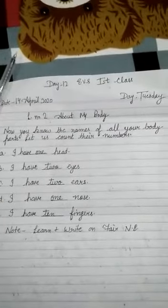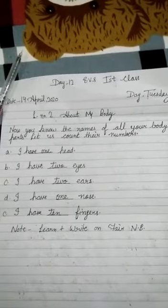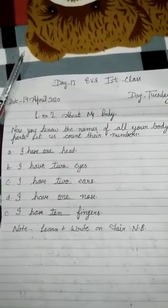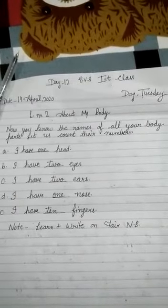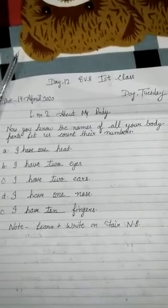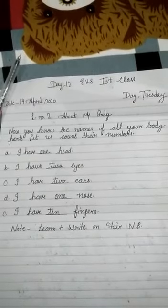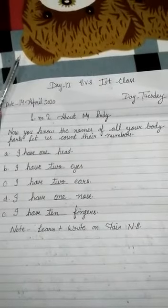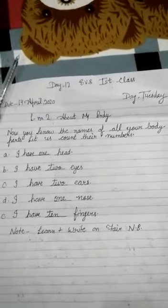Good morning, students. Today's date is 14 April and the day is Tuesday. This is the last number two of EBS. The last name is about 'My Body.' Firstly, read the heading: 'Now you know the names of all your body parts. Let us count their numbers.' Body parts are given — count the numbers and write the answers.